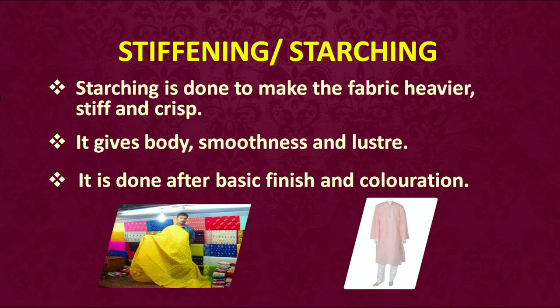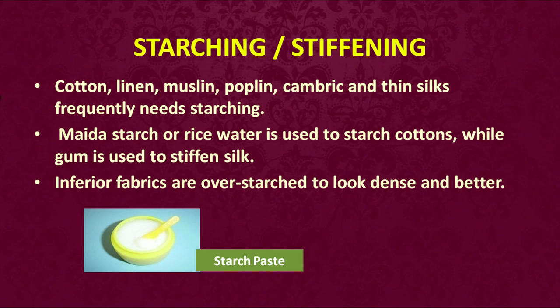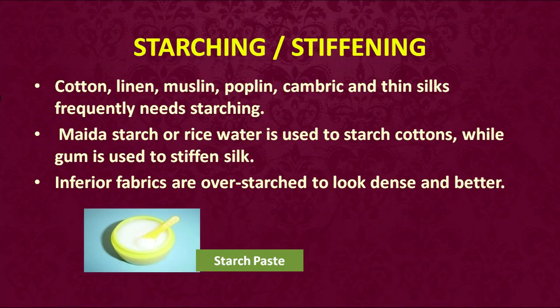Another finish commonly used is stiffening or starching. Starching is done to make the fabric heavier, stiff and crisp — it gives body to the fabric, makes it very smooth and imparts luster. Usually stiffening or starching is done after the basic finish and coloring is done to the fabric. The finish of starching is given to cotton, linen, muslin, poplin, cambric and thin silks. Maida starch or rice water is used to starch cottons, while gum is used to stiffen silk fabrics. Often, inferior fabrics are over-starched to look dense and better.